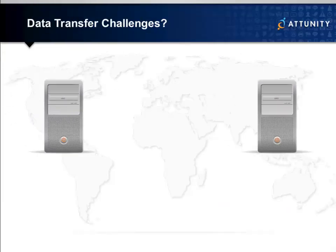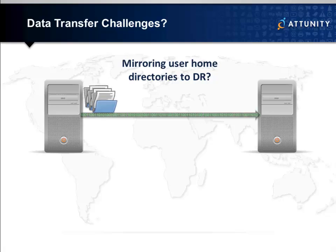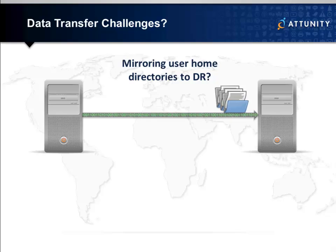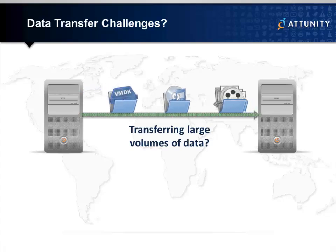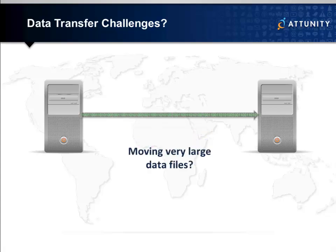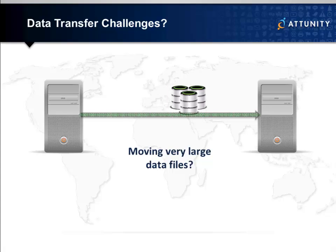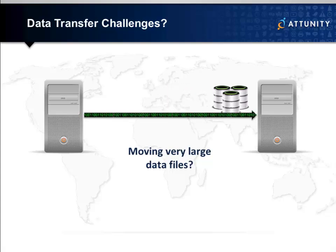We really do understand the typical data transfer challenges companies experience. It could be something as simple as trying to keep your user's home directories mirrored to a DR location, or trying to replicate files to remote offices, or it could be that you've been experiencing major project delays because you need to transfer large data volumes or very, very large files. What do you do when your division exec calls and says that a few terabytes of database extracts have to be sent to an external partner for processing, and it needs to be done right now?